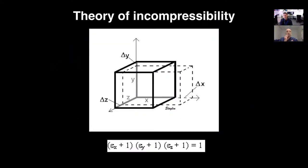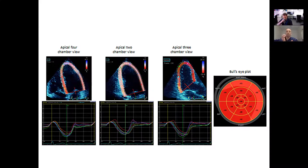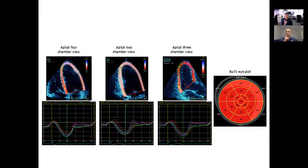If you have regional wall motion abnormalities, global longitudinal strain is just an average that includes all of them. So regional wall motion abnormalities can produce an abnormal global longitudinal strain, even when ejection fraction remains normal. It provides another objective measure suggesting systolic dysfunction. You can also see sections that are abnormal by eyeballing the picture and identify regional wall motion abnormalities — strain can pick up subtle dysfunction.